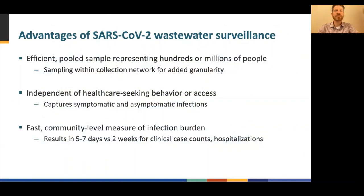Wastewater surveillance presents several key advantages for supporting the public health response to COVID-19. First, it provides an efficient system for collecting pooled samples representing community populations of hundreds, thousands, or even millions of residents. Most toilet flushes into sewers in America arrive at wastewater treatment facilities within hours. Collection networks can be strategically sampled to assess the burden of disease with even more granularity at the neighborhood or sub-community level. Second, since wastewater surveillance is not impacted by healthcare seeking behaviors or access, it does not matter whether people go to the doctor or if clinical testing capacity is limited. Finally, wastewater surveillance is fast, capable of providing community-level data within five to seven days compared to approximately two weeks needed for clinical indicators such as case counts or hospitalizations.